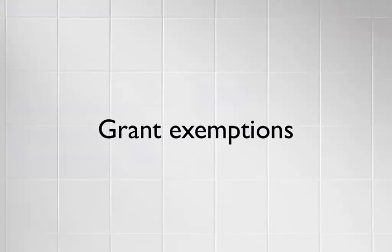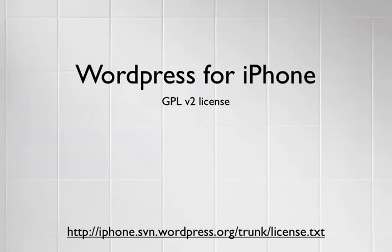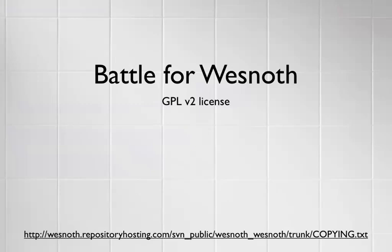Once you've done copyright assignment, you can grant specific exemptions for particular ways of distributing your code. You might say: if Apple is distributing a binary, we will provide a link within our app to the source — so if Apple has provided the binary, you're providing a way to comply with the GPL, and you can say this is sufficient in writing and make that the license to your project. You can really only do this if you're the sole copyright holder or starting a project from scratch. Popular examples of GPL projects doing this: WordPress for iPhone is under GPLv2, they ask for copyright assignment straight away. Battle for Wesnoth is a long-standing open source project that had the foresight to do this properly, and so they can release on the iPhone.